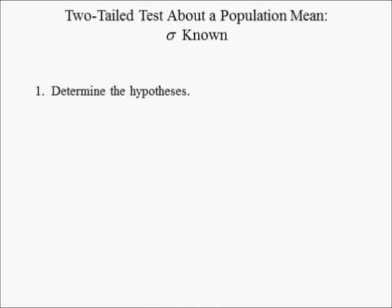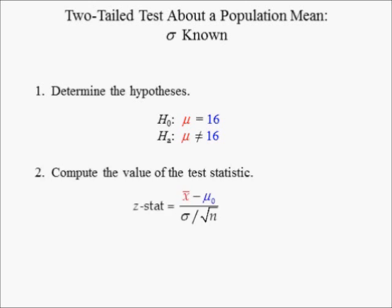In step one, we determine the hypothesis. Since the filling process is continued if sample results are consistent with the assumption that the mean filling weight for the population of Coke bottles is 16 ounces, the alternative hypothesis must be that the population mean mu is not equal to 16 ounces. If the alternative hypothesis is true, the process should be adjusted. In step two, the test statistic is computed. Since we're assuming sigma is known, we use a z statistic. With x-bar equal to 16.0933, hypothesized mean of 16, population standard deviation of 0.2, and sample size of 30, the z-stat is equal to 2.56.